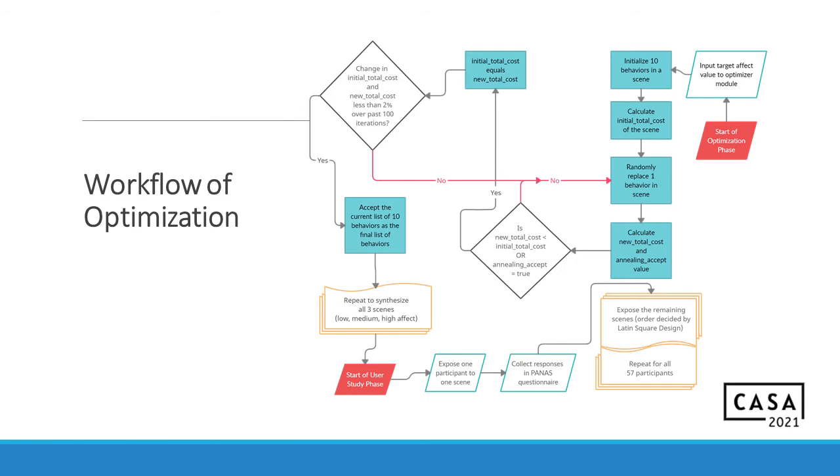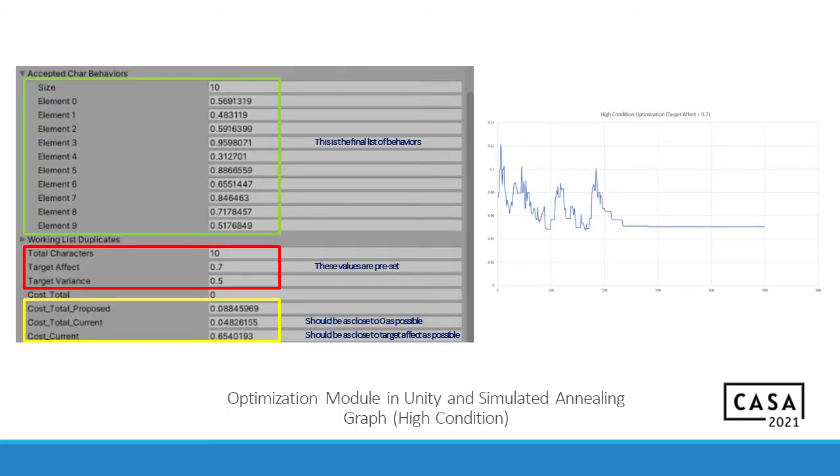Here is a graph of how the workflow of the optimization happened. So basically, we start off in the optimization phase. We input the affect values. 10 behaviors are pulled into the scene and the total cost, initial total cost is calculated. And then a random behavior is replaced. We calculate the new cost. And then based on certain parameters of randomness, we either accept or reject that. And once the entire scene has been reached to a certain value, we basically synthesize it for low, medium, and high affect. Basically, we provide a low value, a medium value, and a high value. And once all the three scenes are done, we expose the participants to one scene, collect the responses, then expose them to the second one, collect the responses, and so on and so forth.